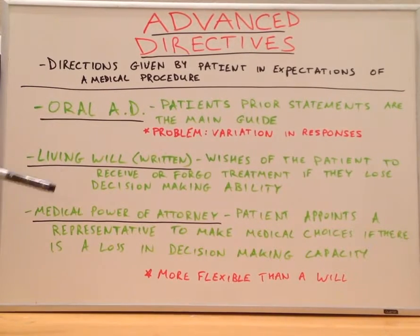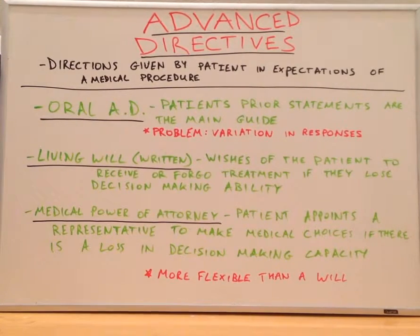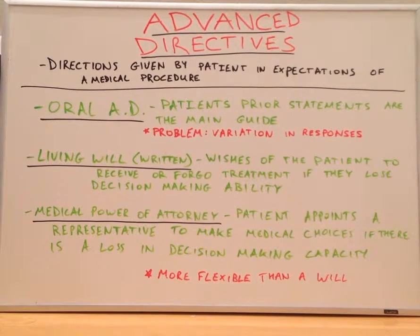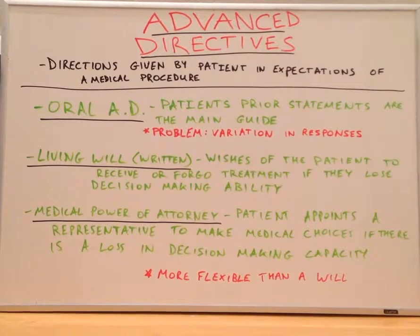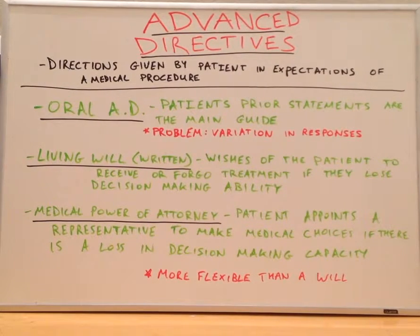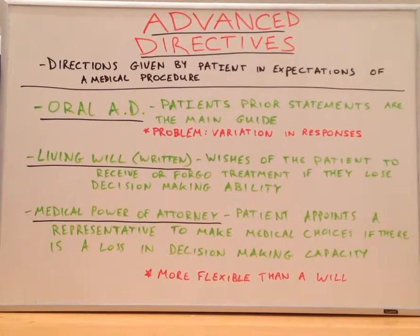Even if a patient has lost the decision-making capacity, the patient still has the autonomy to change their mind — to either decide to go with or forego a particular procedure. Whereas with the living will,